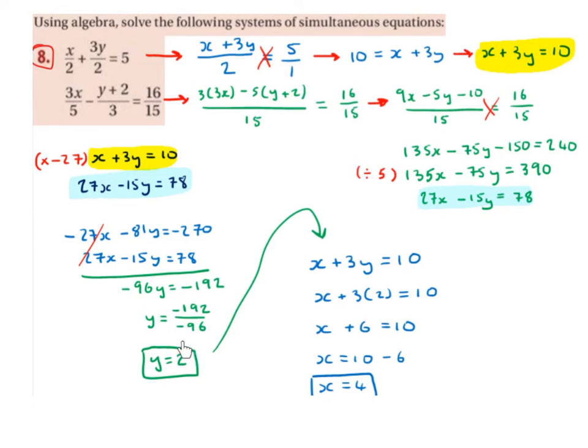I'm going to substitute y equals 2 into one of the equations. I'm going to go for this one. So I have x plus 3y equals 10. Swap the y for 2 with brackets around it. 3 by 2 is 6. 10 take away 6 is 4. So x is 4.